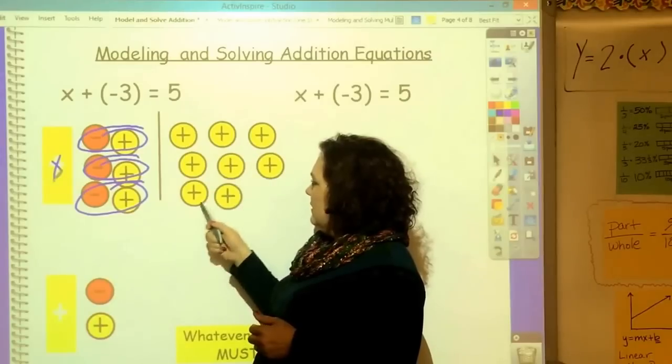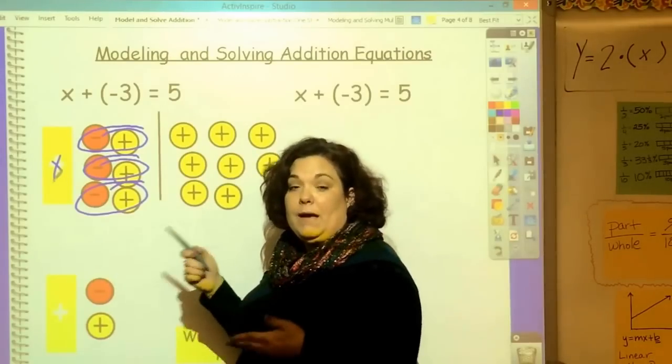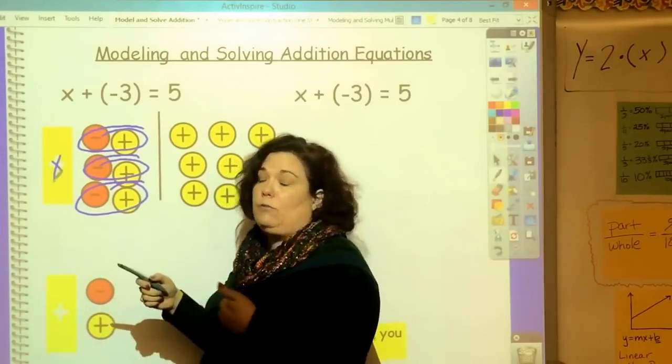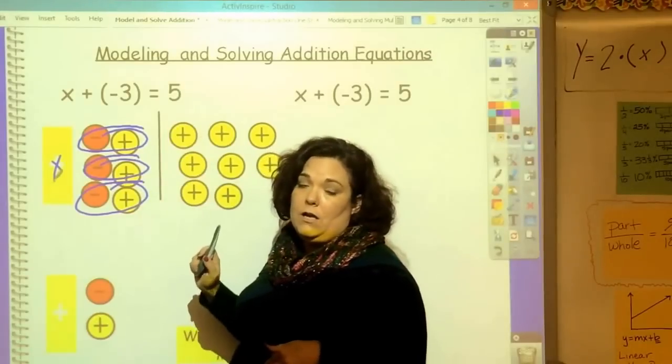So, x is equal to 1, 2, 3, 4, 5, 6, 7, 8. And put it back in, 8 plus a negative 3 does equal 5. So, that checks.